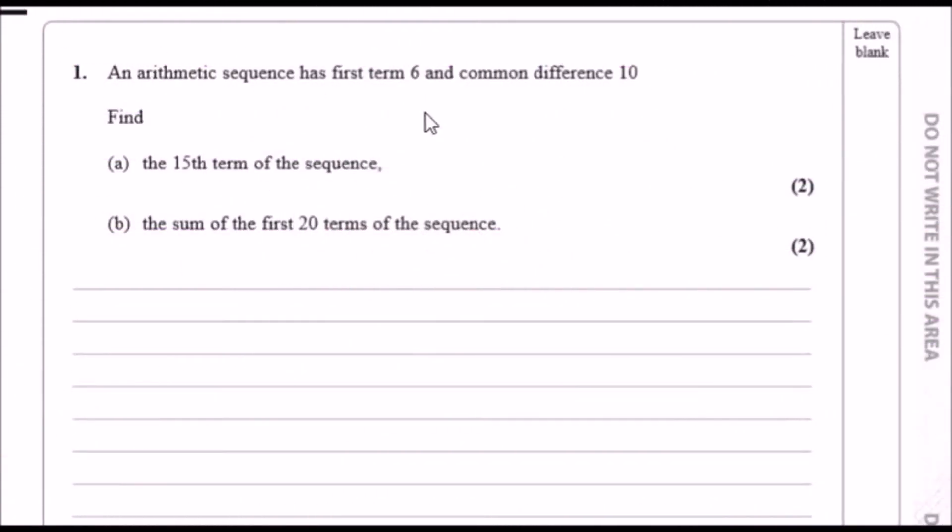Arithmetic sequence here we go. We know that an arithmetic sequence has first term 6 and common difference 10. So quickly note this down: the first term a is 6 and the common difference d is 10.